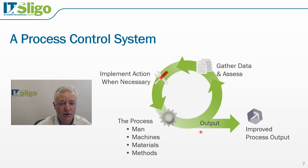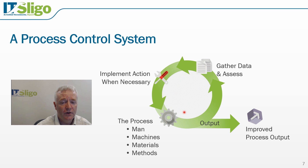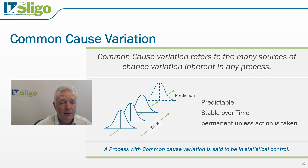Any variation in the output is identified very quickly and changes are implemented to bring the process back on track. This is often referred to as statistical process control, because we are gathering data and using statistics to actually control the process. The method by which we do this will be the control chart. Let's look first at the causes of variation in a process.